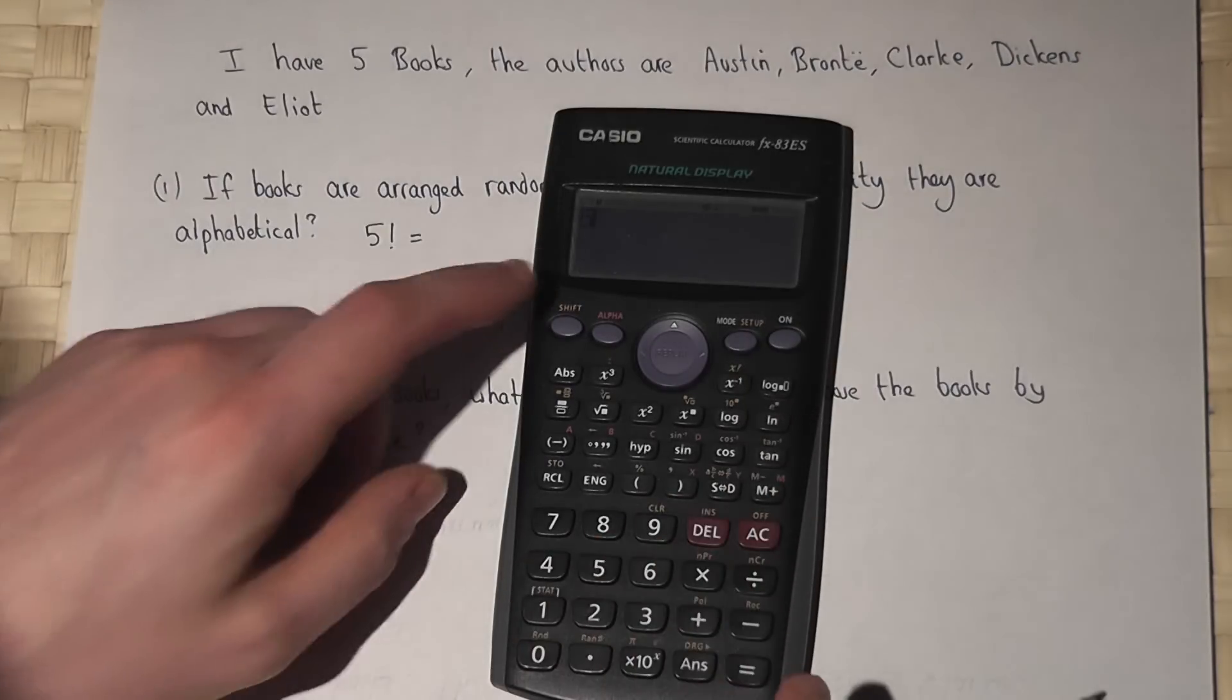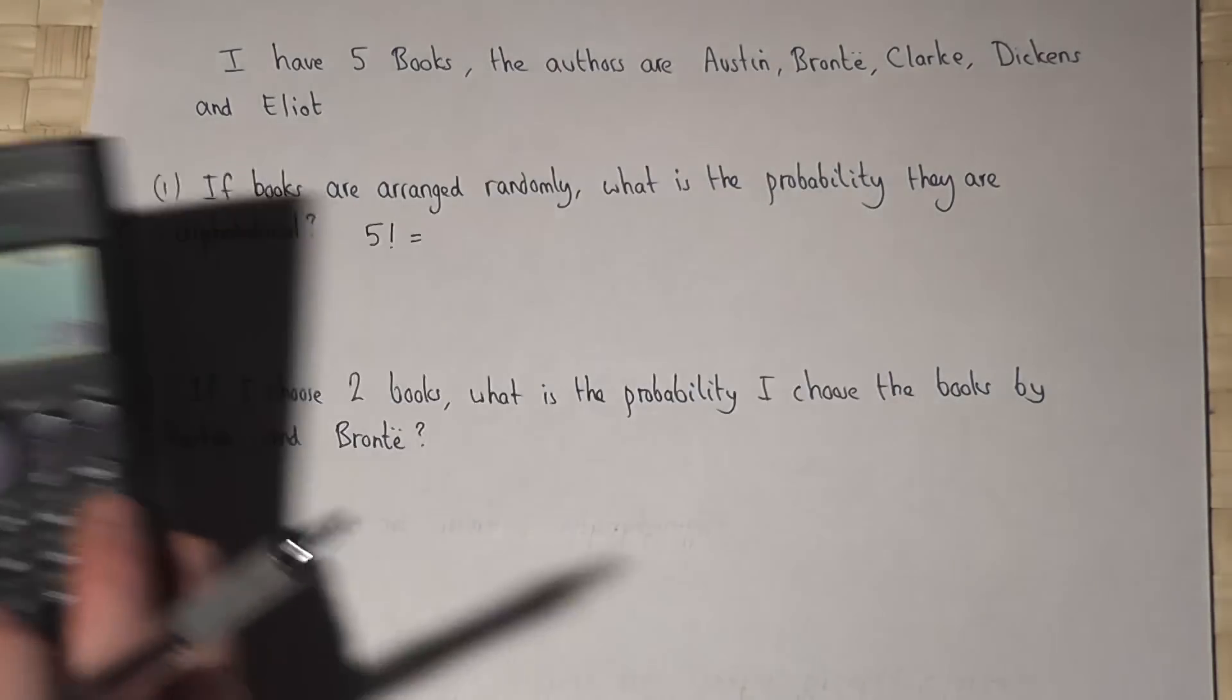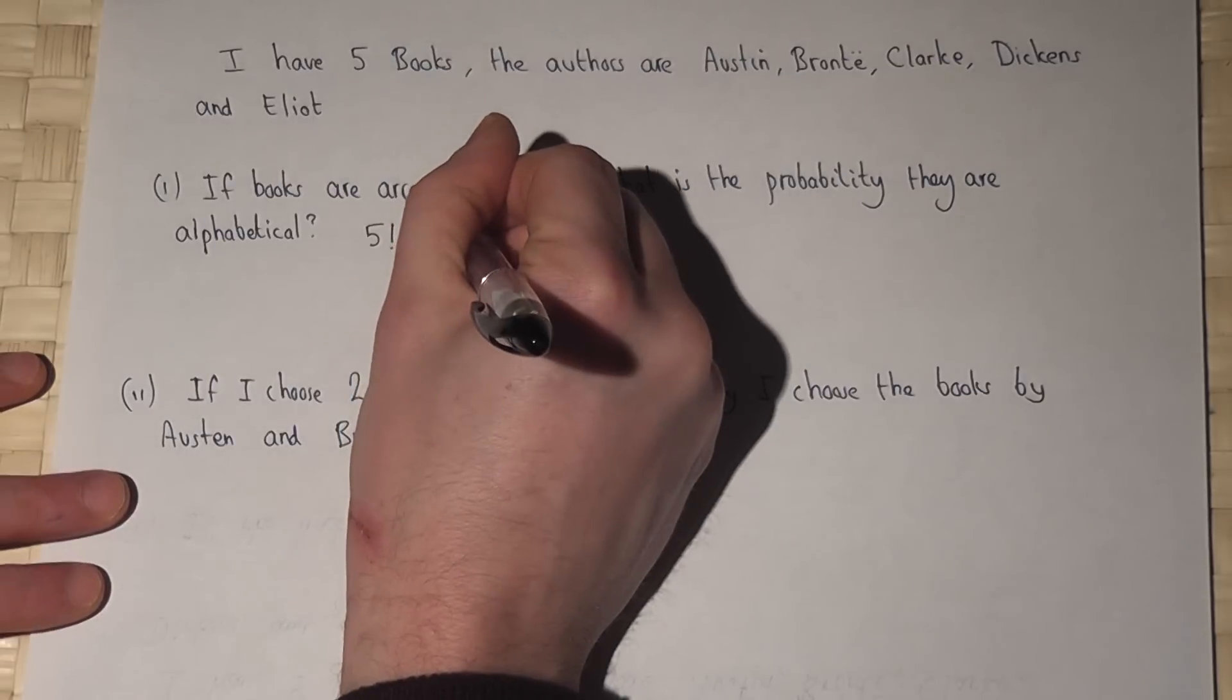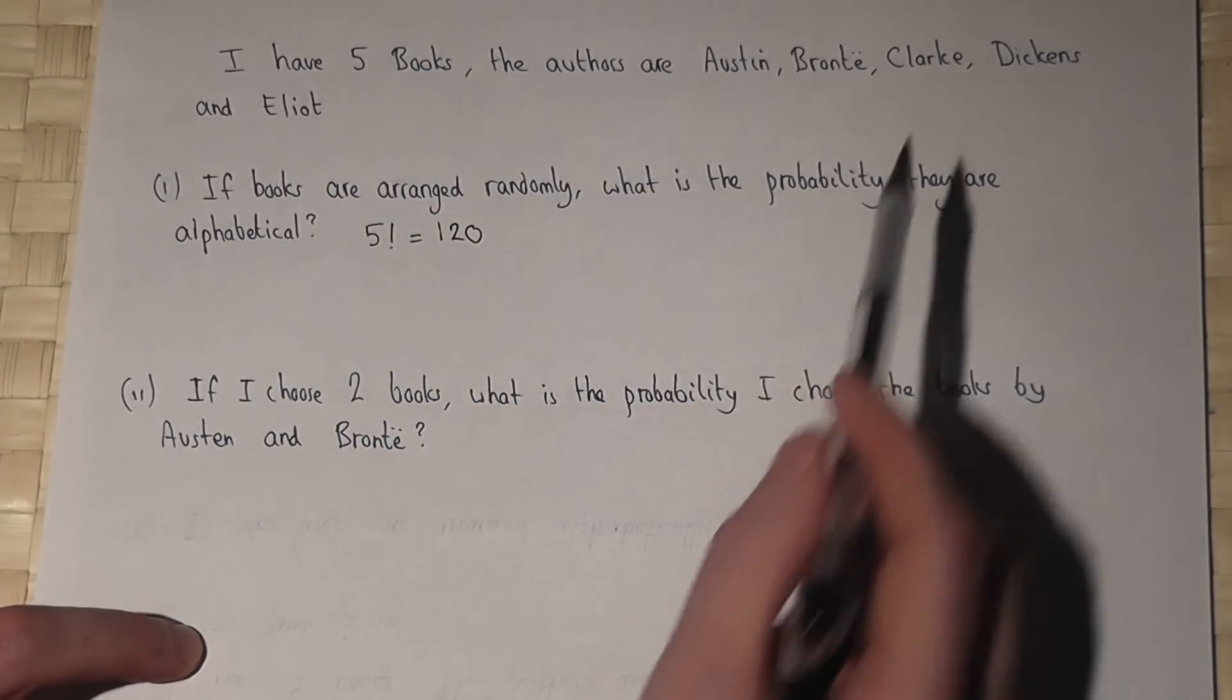We can press five, shift, factorial, press enter and we get 120. So there are 120 ways of arranging the five books.